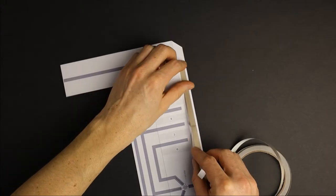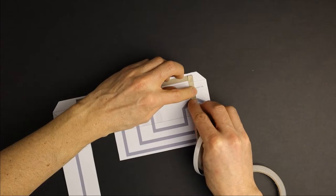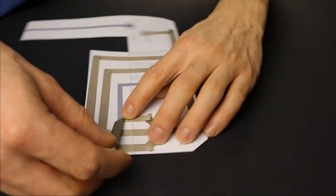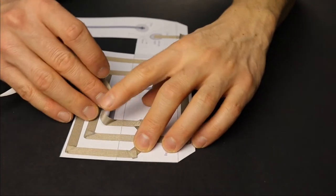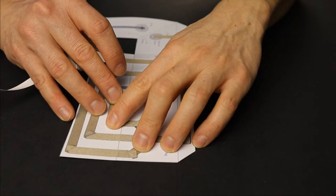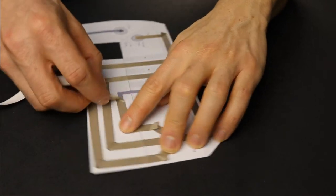Now trace all circuit tracks shown in the template with conductive tape. To make corners, you can first fold the tape to the opposite side and then hold down and stick the tape in the direction you want to go.